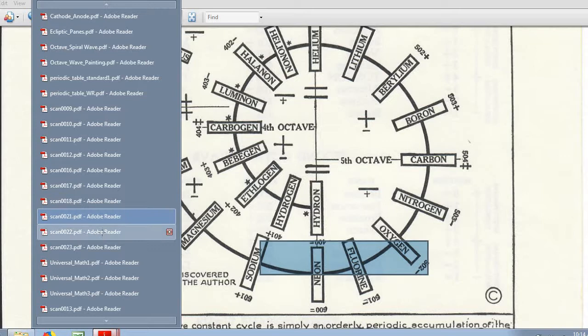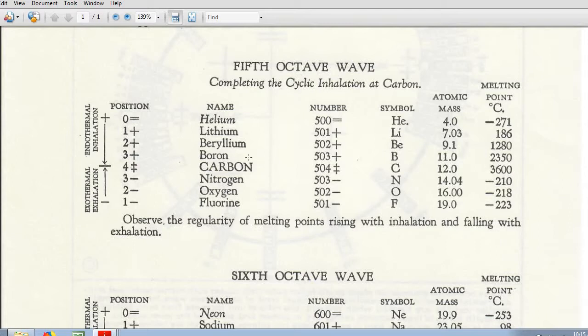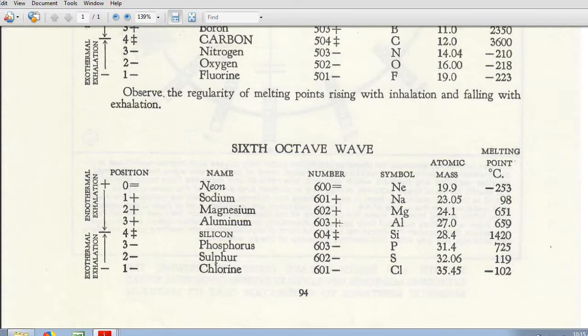Very interesting because it does predict every single thing that we have in nature and so the fourth octave once again carbogen, so it starts off with hydron an inert gas that we don't know about so hydrogen is the first one at 401, carbogen and then it goes in the fifth octave and the fifth octave we know about all of these elements in the mainstream and so carbon, this explains why you have carbon the amplitude element as the highest melting point.